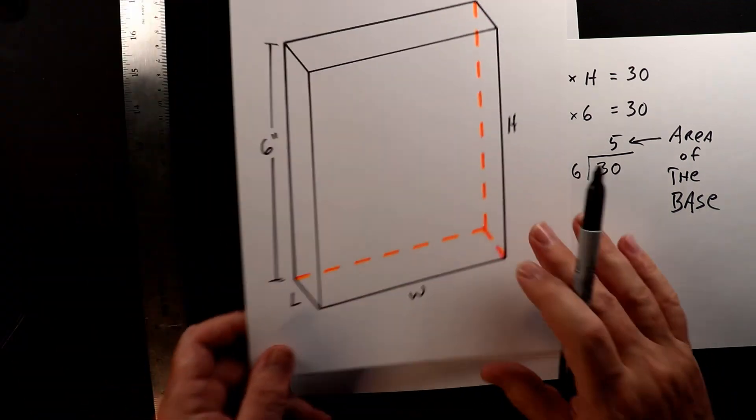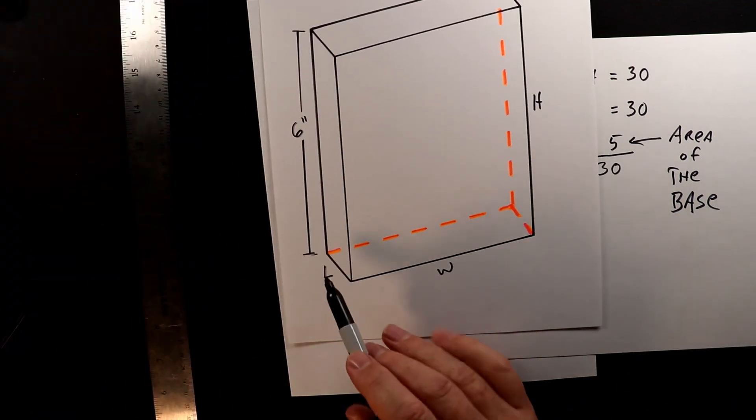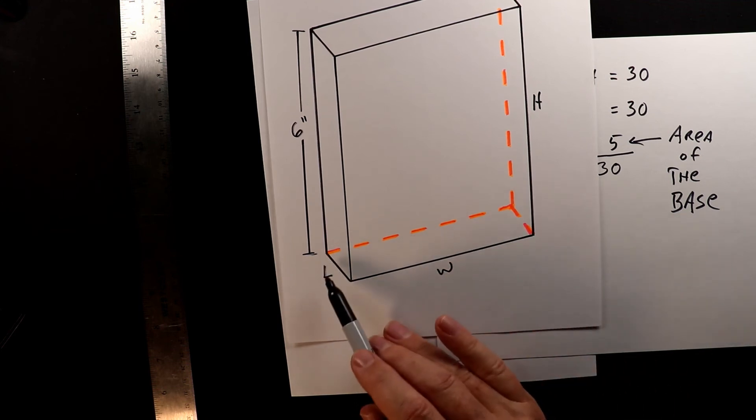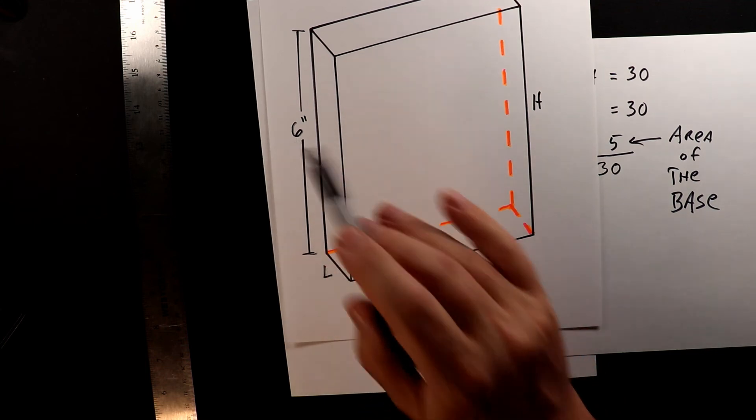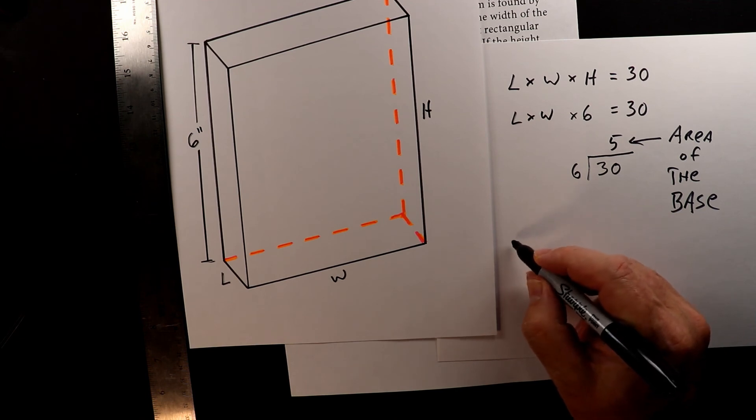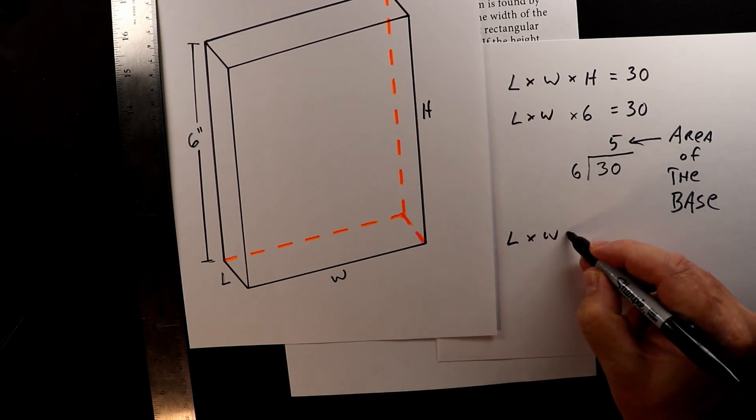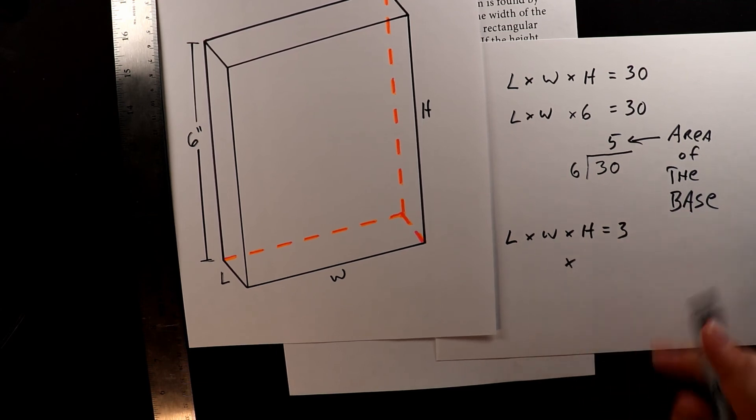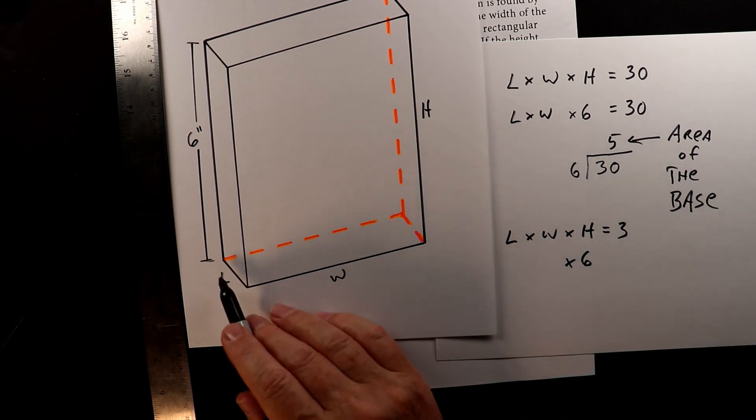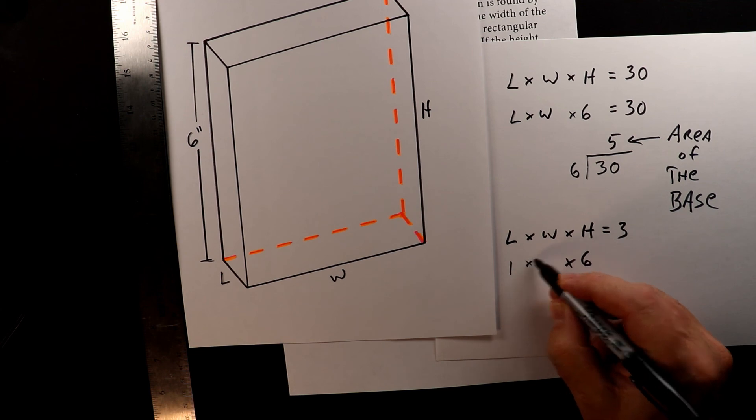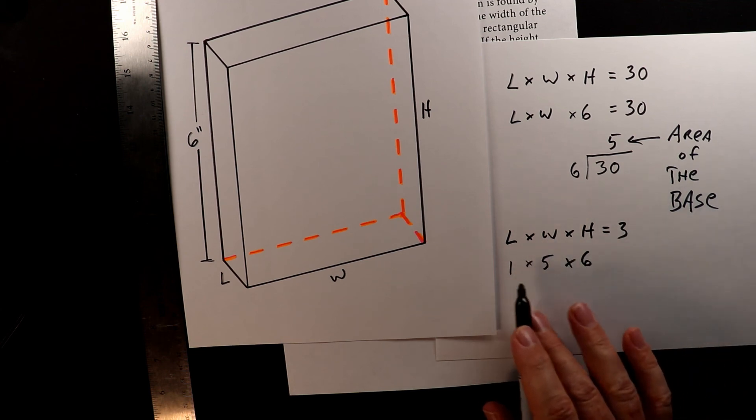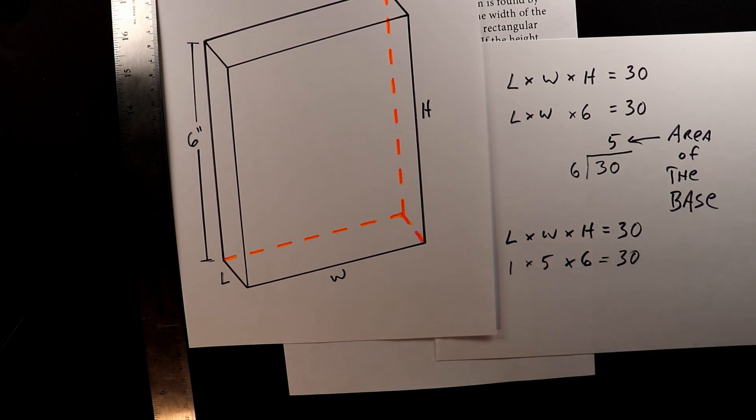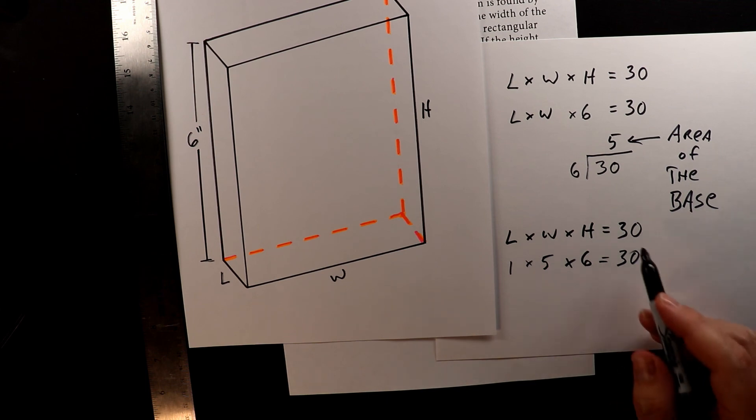So for this one, I kind of figured out what the answer was. If this is a one, if it's one inch long and five inches wide, one times five times six is 30. So let's test that. So we have length times width times height equals 30. We knew that the height was six, the length is one, and the width is five. One times five is five. Five times six is 30. So we can go back and check our work.